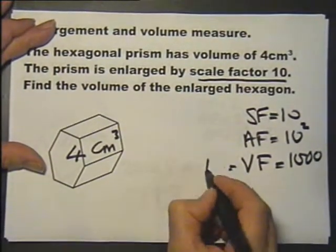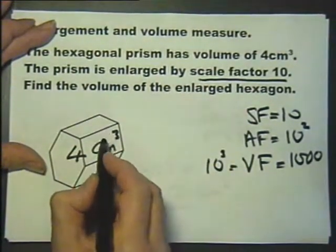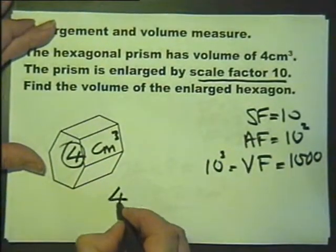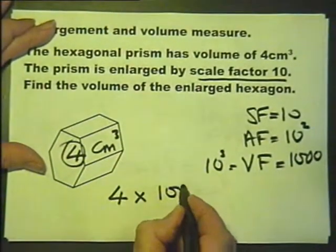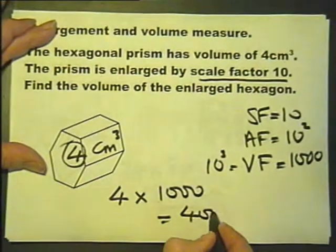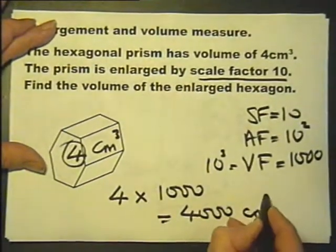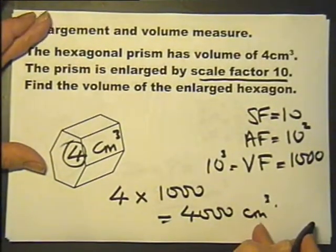It's 10 cubed, so we'll take the volume of the original object, multiply it by the volume factor, and we'll have the volume of the enlarged hexagonal prism, the image.